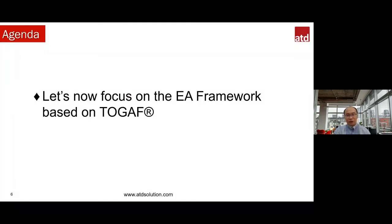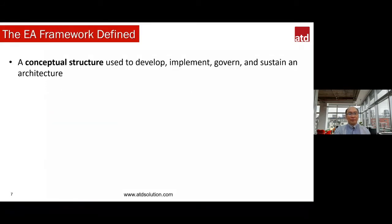Let's focus on the EA framework, because it maps directly to the notation in the second part. A framework is the conceptual structure used to develop, implement, govern, and sustain an architecture. Architecture is not a one-time effort; it is a journey and a culture that must be sustained for many years. A framework is also a method for designing a target state of the enterprise — where you want to go. With so many competitors, especially in digital transformation, the environment is totally unforgiving. Enterprise architecture helps an organization define its target state and how to get there.